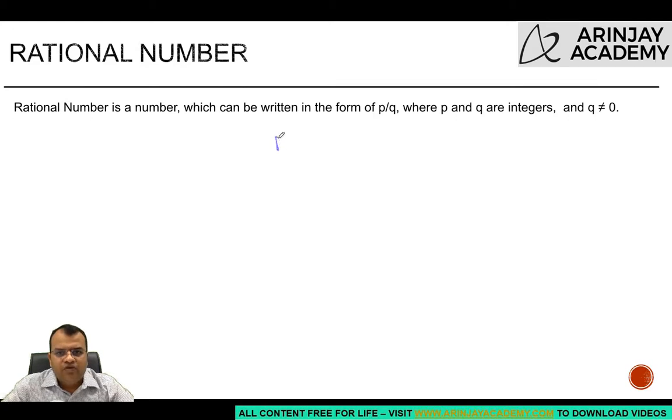You have seen natural numbers. What are natural numbers? They are 1, 2, 3, 4, 5, 6 and so on. We have studied whole numbers. If we add zero to natural numbers, then zero plus natural numbers is whole numbers.